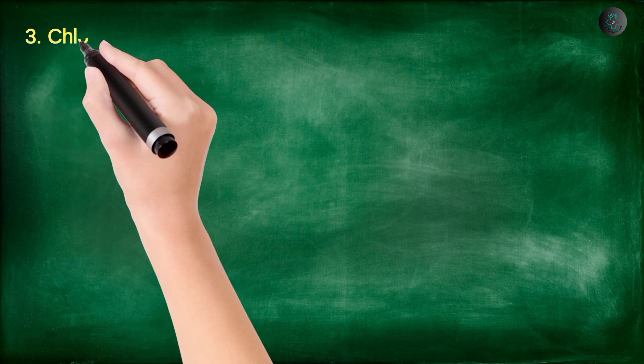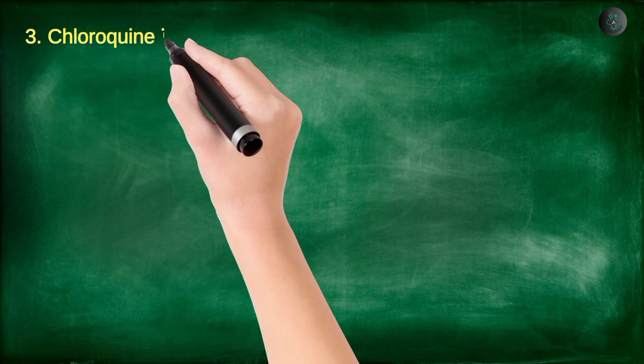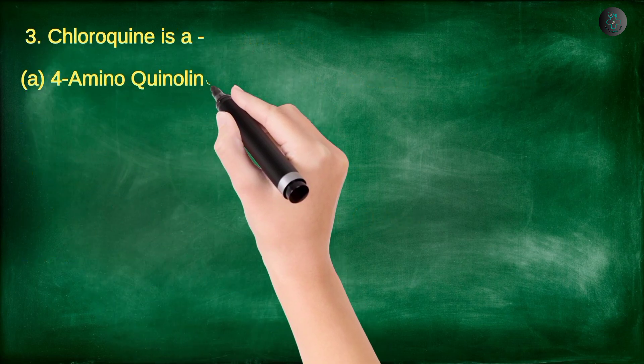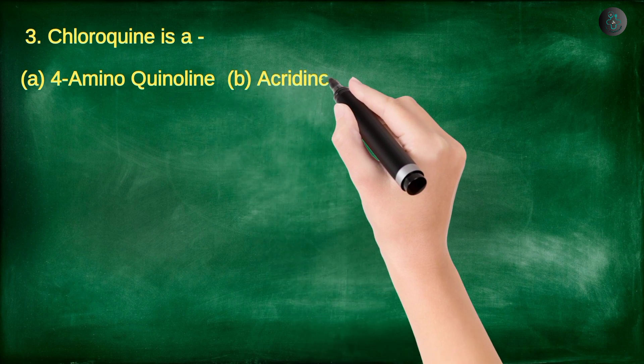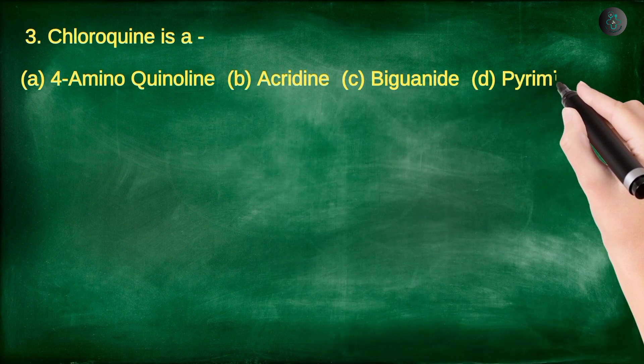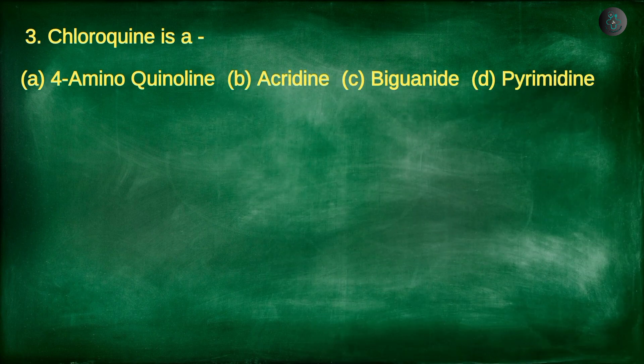Question 3. Chloroquine is: A. 4-Aminoquinoline, B. Acridine, C. Biguanide, D. Pyramidine.